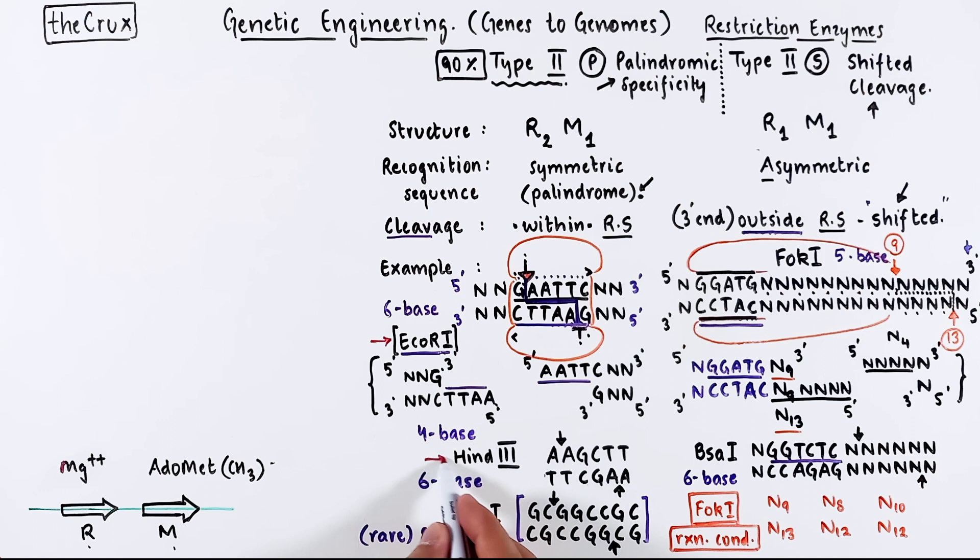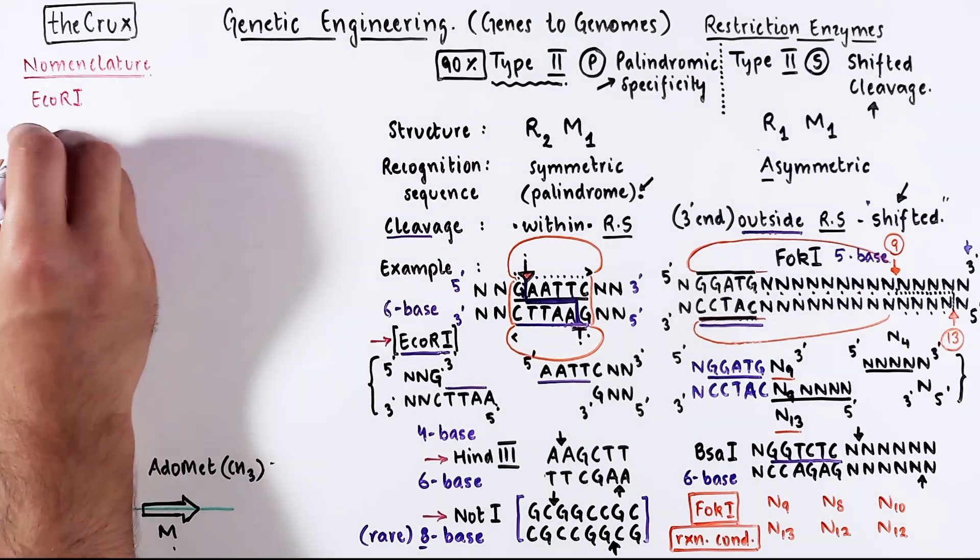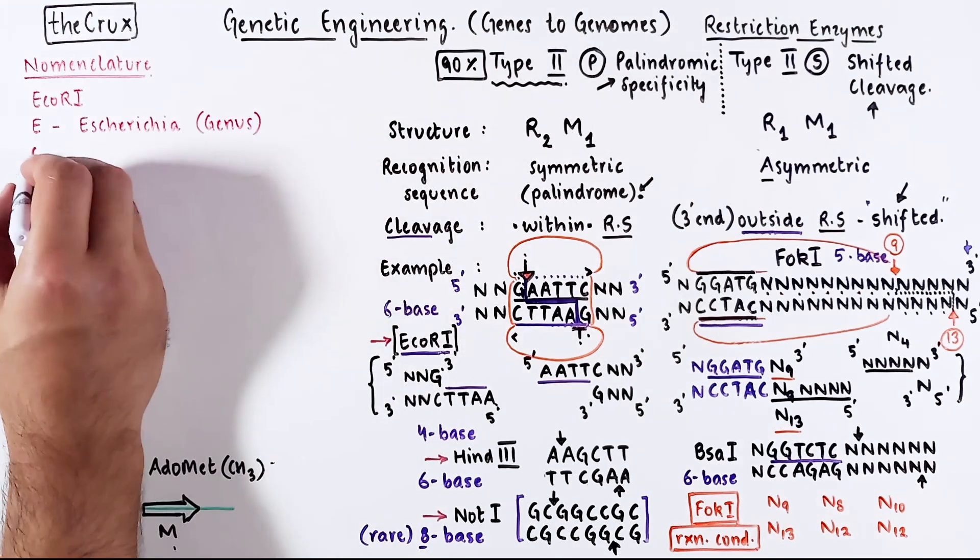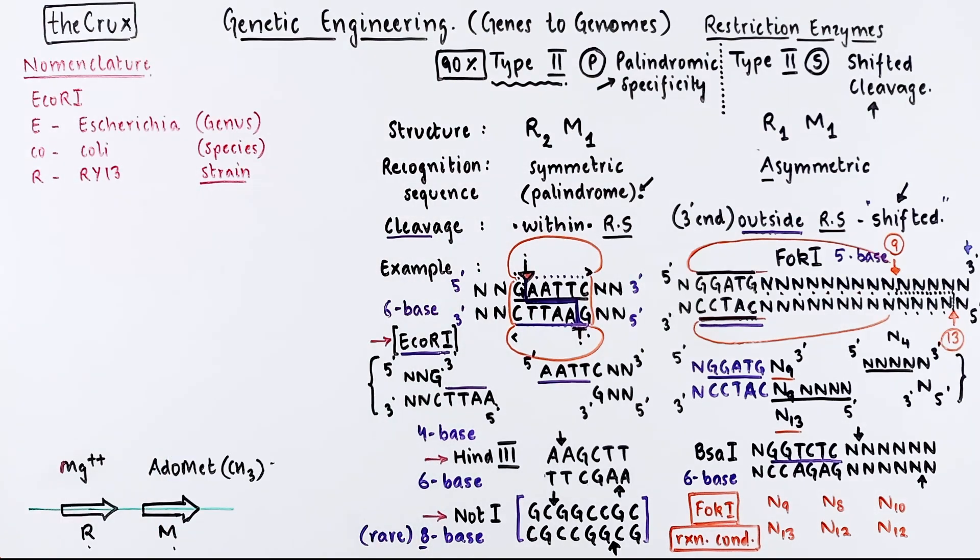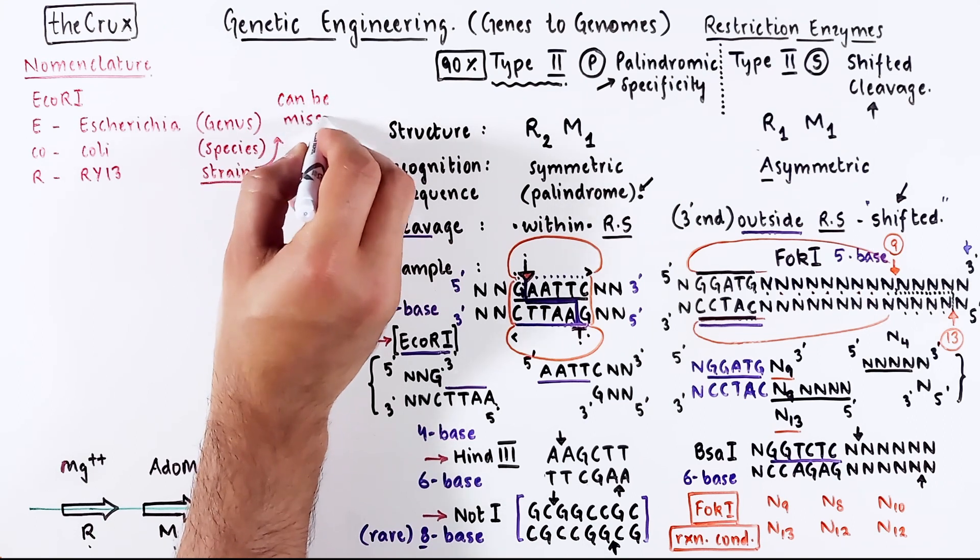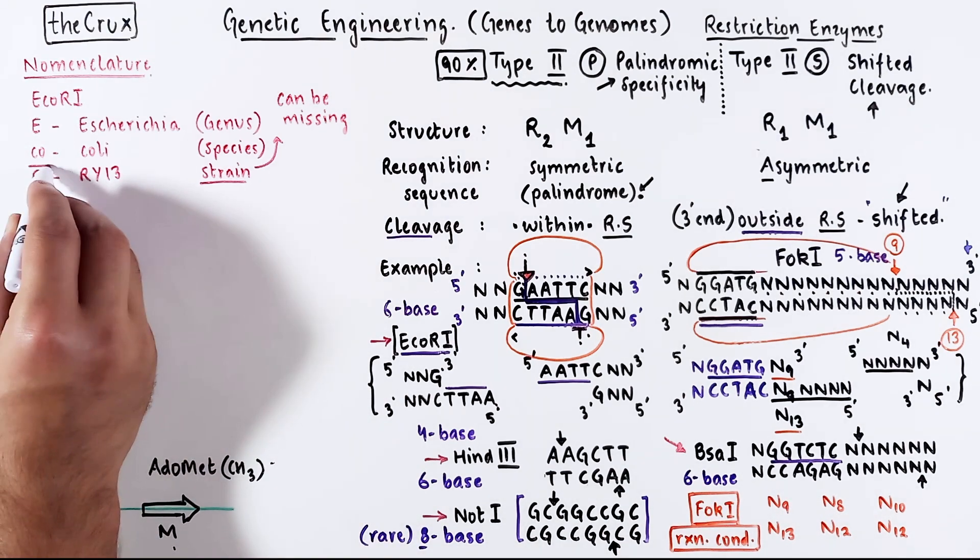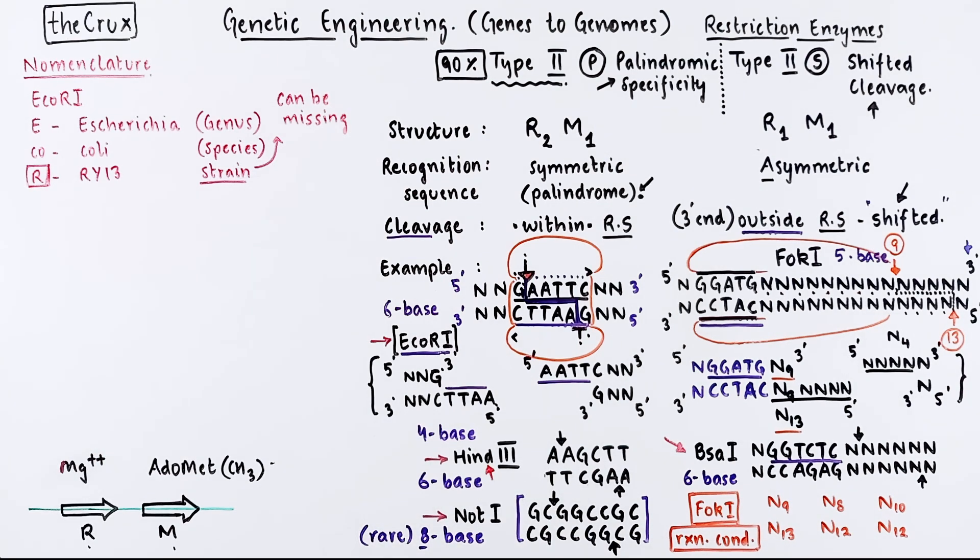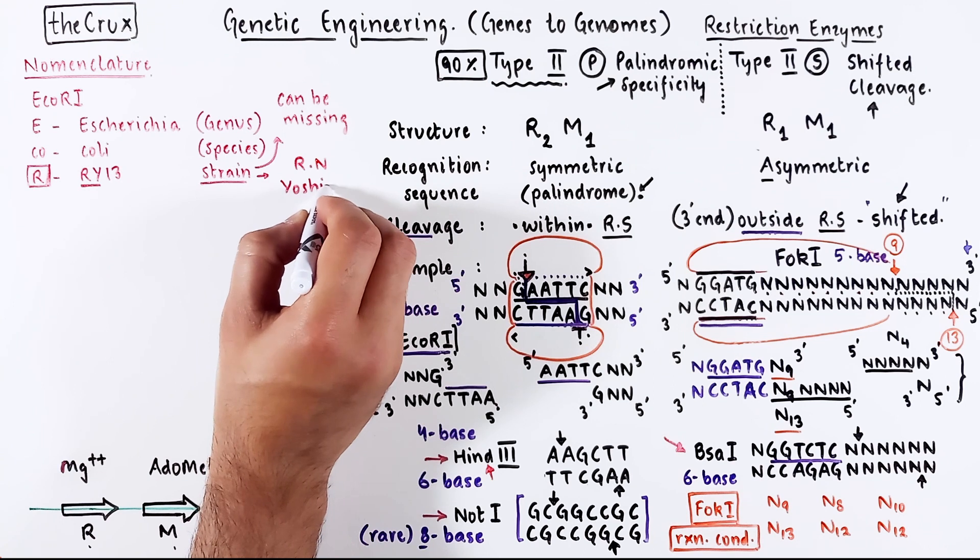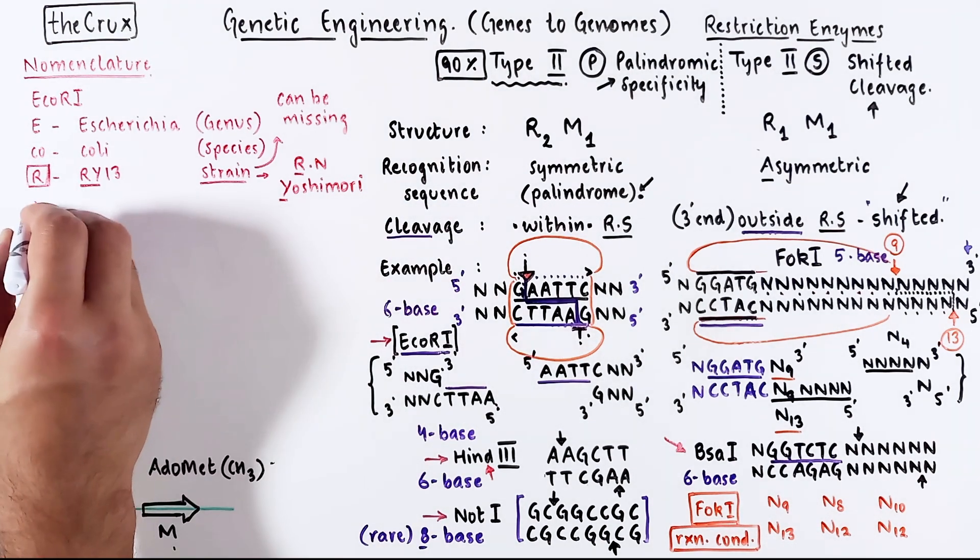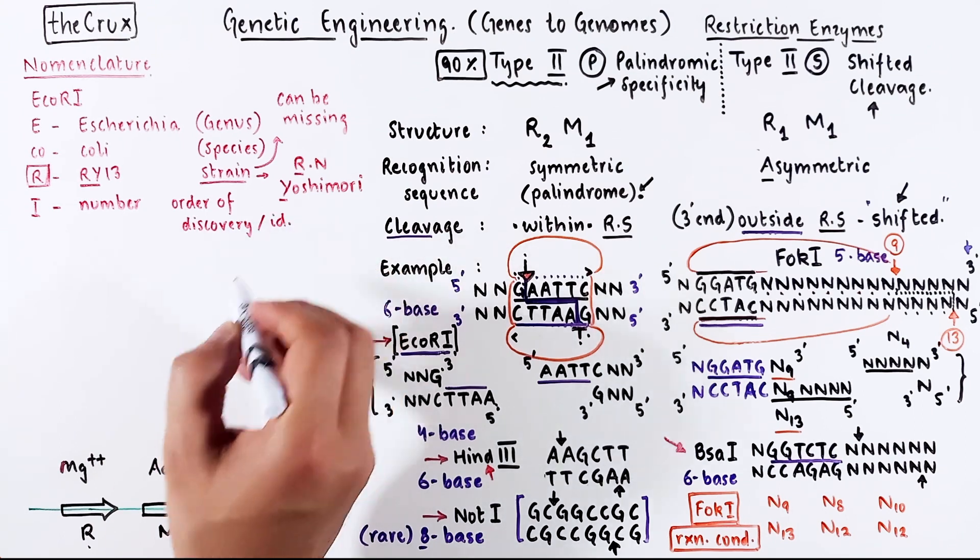Let's talk about the naming of these enzymes because it seems like there is a consistent yet a very weird way of writing them. Let's take the example of EcoR1. The E comes from Esteria, the genus of the bacteria in which it was discovered. The Co is from Coli, the species of the bacteria in that genus in which it was identified. The R represents the strain of the bacteria. Sometimes strains are missing. BSA1, for instance, is missing the strain. The strain is also always not capitalized. In HIN3, the D is a strain, but it is not capitalized. Strains can be named whatever. For instance, RY13 is named after the person RN Yoshimori who identified the strain. The number is the roman numeral at the end, which is associated with the sequence or order in which the enzyme was discovered in the EcoR strain.